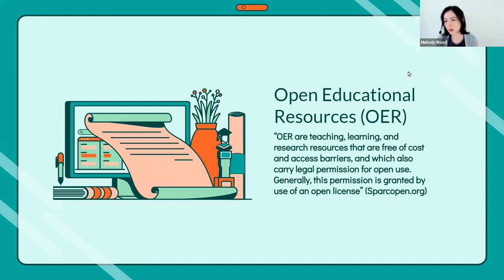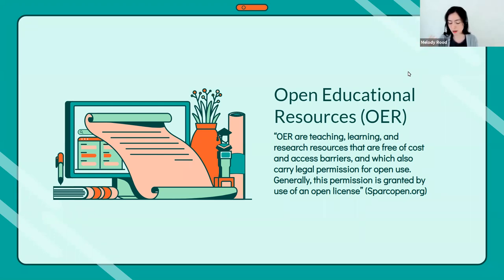We generally define OER by its ability to utilize the five R's. The five R's are: Reuse — content can be reused in a classroom or on a website; Retain — you can keep copies for personal archives, like downloading to your computer; Revise — modifying or altering it, including translations; Remix — adapting content with similar content, like a collage of different open materials; and Redistribute — sharing it with anyone else. Those are the five R's that make OER what it is.